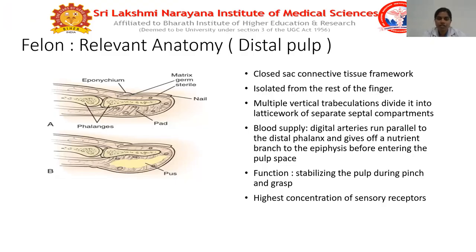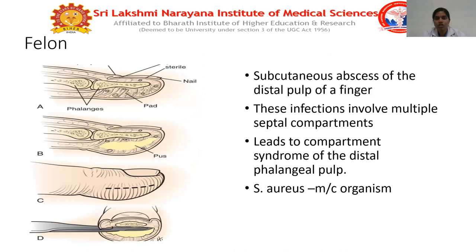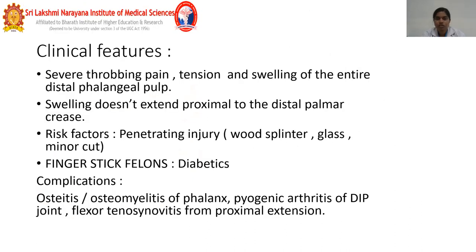Coming to felon — felon is an infection of the distal pulp space. The anatomy of the distal pulp space is important: it has a closed connective tissue framework isolated from the rest of the finger with multiple vertical trabeculations dividing it into septal compartments. The digital arteries run parallel to the distal phalanx and give a nutrient branch to the epiphysis before entering the pulp space. Functions include stabilizing the pulp during pinch and grasp, and it contains the highest concentration of sensory receptors. Staphylococcus aureus is the most common organism. Clinical features are severe throbbing pain, tension, and swelling of the entire distal phalangeal pulp. The swelling does not extend proximal to the distal palmar crease because septations limit the spread.